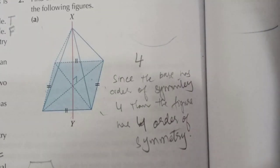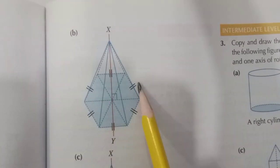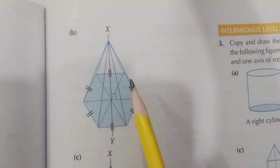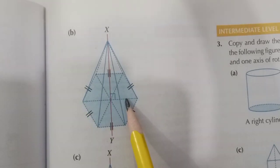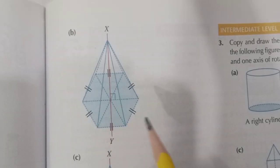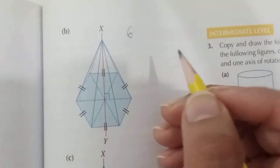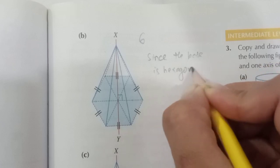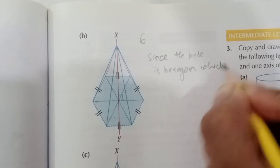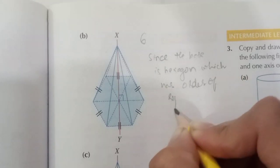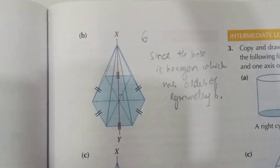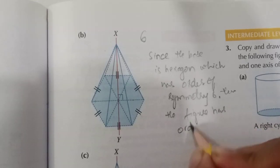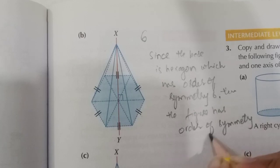In part B, the base has 6 sides — 1, 2, 3, 4, 5, 6 — so the base is a hexagon. A hexagon has order of rotational symmetry 6, so this figure has order of rotational symmetry 6.